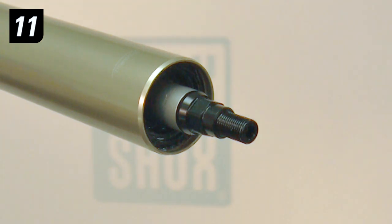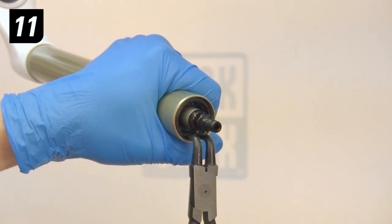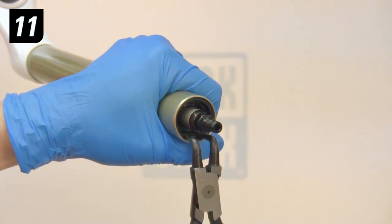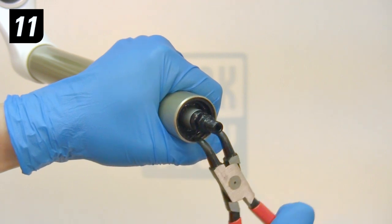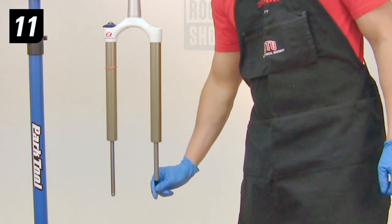Again, leave just enough of the shaft exposed so that you can grab onto it. Install the snap ring into the groove at the bottom of the upper tube. Check that the snap ring is fully seated by rotating it back and forth a couple of times. Then pull the air shaft to its full extension.